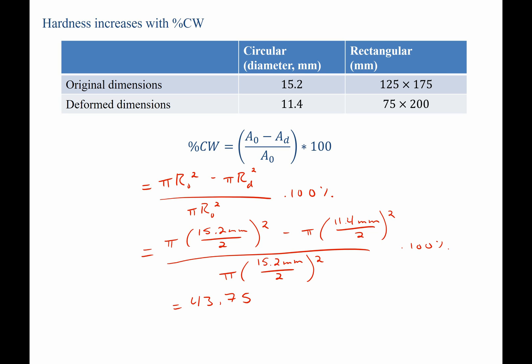So we find for our circular sample we have 43.75% cold working.